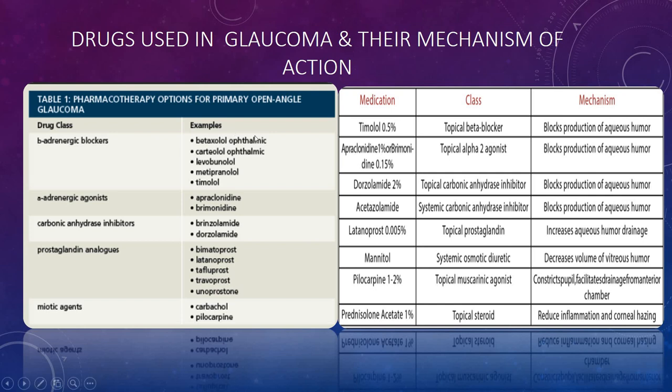Next is the very important part — drugs used in glaucoma and their mechanism of action. I have provided a tabular form of the drugs here, but I suggest you also go through your textbooks such as KD Tripathi or Rang and Dale, whichever is available to you, for more detail on the mechanisms. I have jotted down the key points here, but for details you need to go through the books.